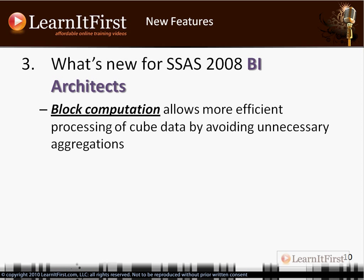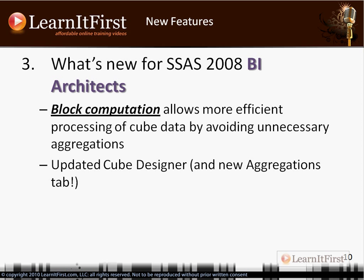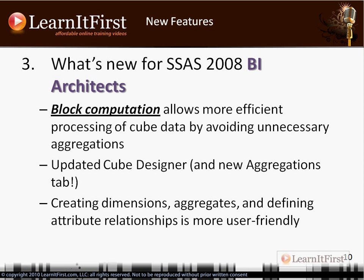On the BI architect track, we have the idea of block computation in SQL Server 2008 Analysis Services. This allows us to get our aggregations faster. When retrieving data, it basically means we can skip unnecessary aggregations — just answer the question being asked without going to compute 50 other aggregations and making you wait four hours. It allows Analysis Services to ignore un-asked-for aggregations.